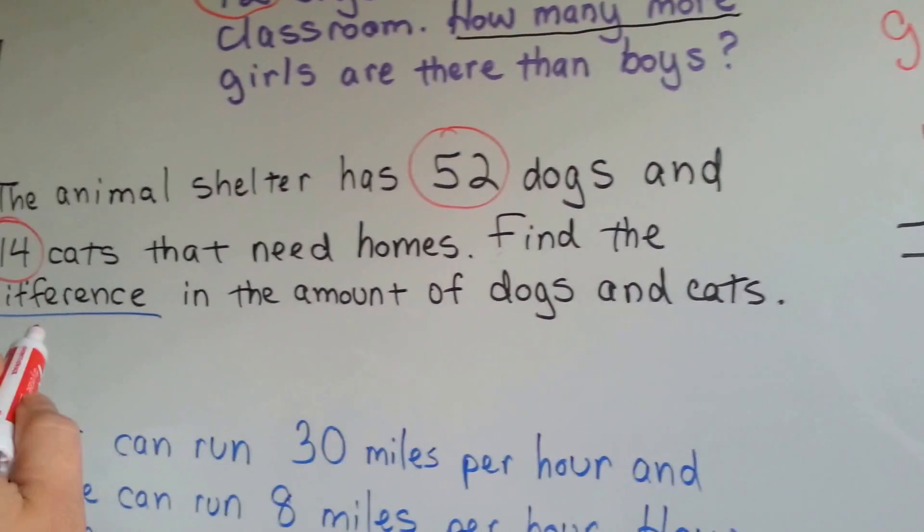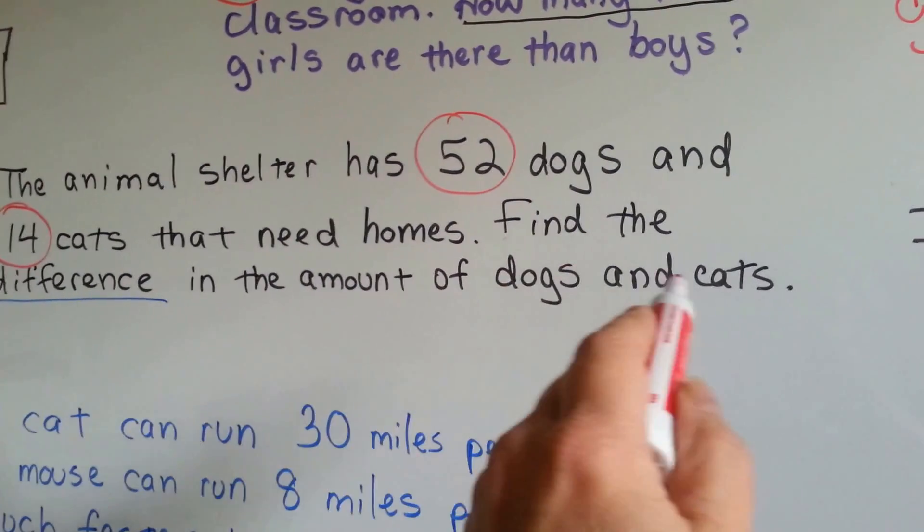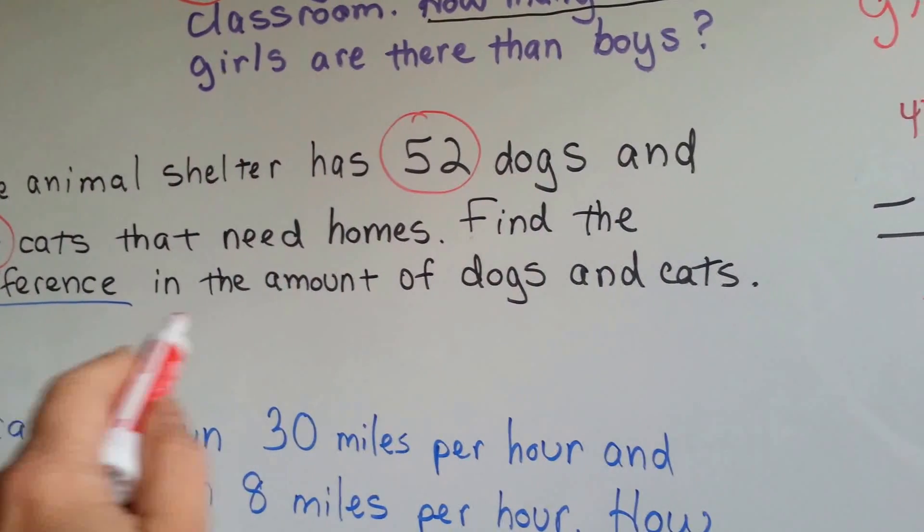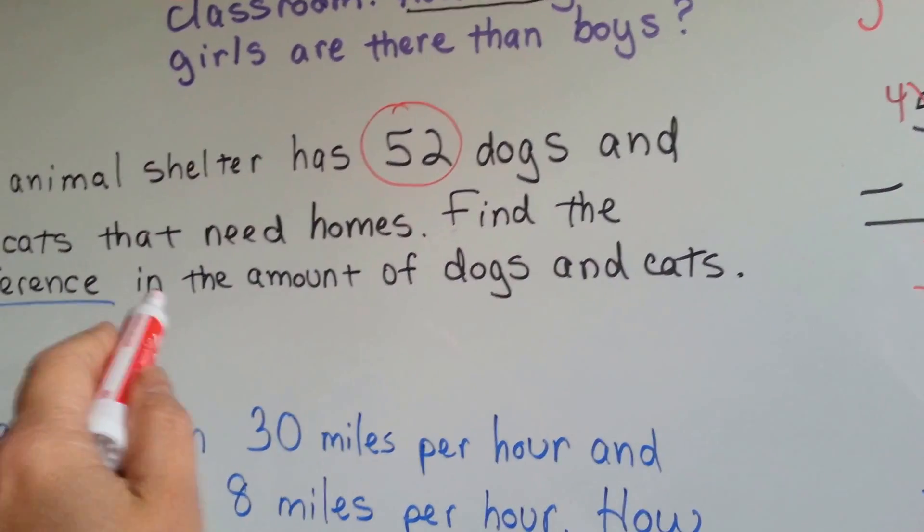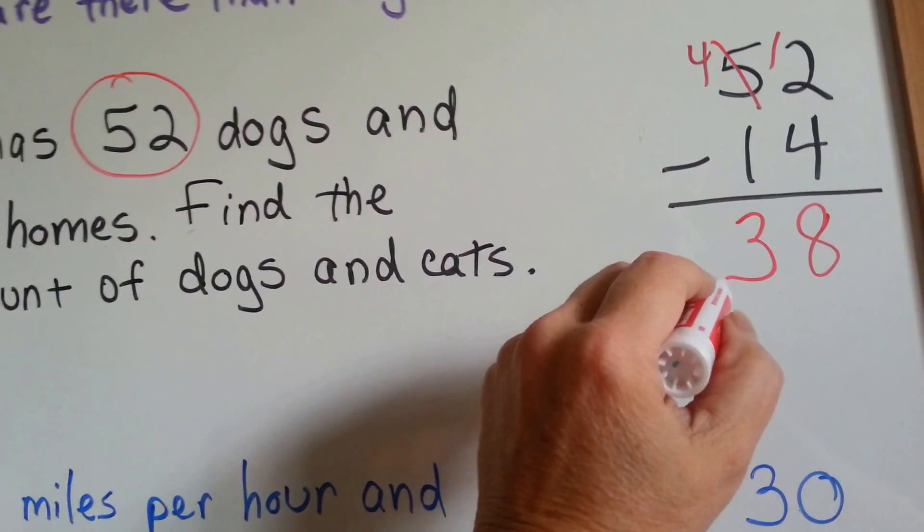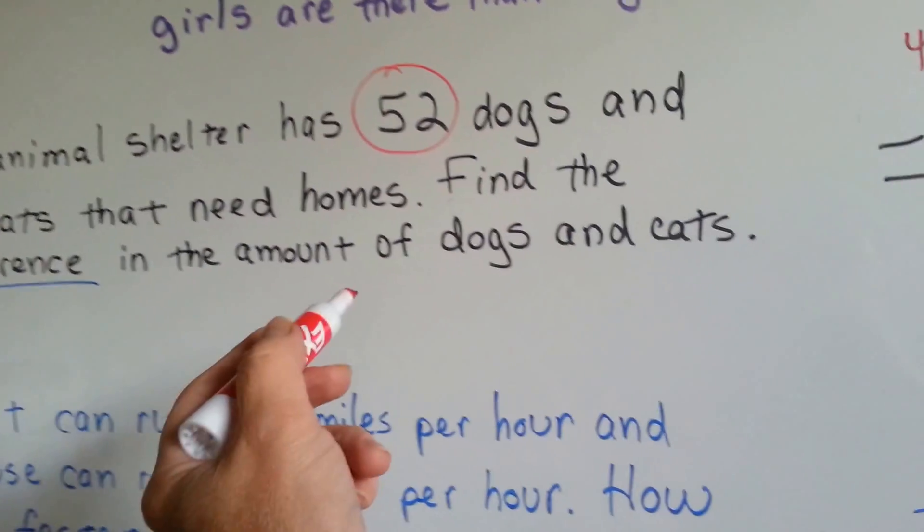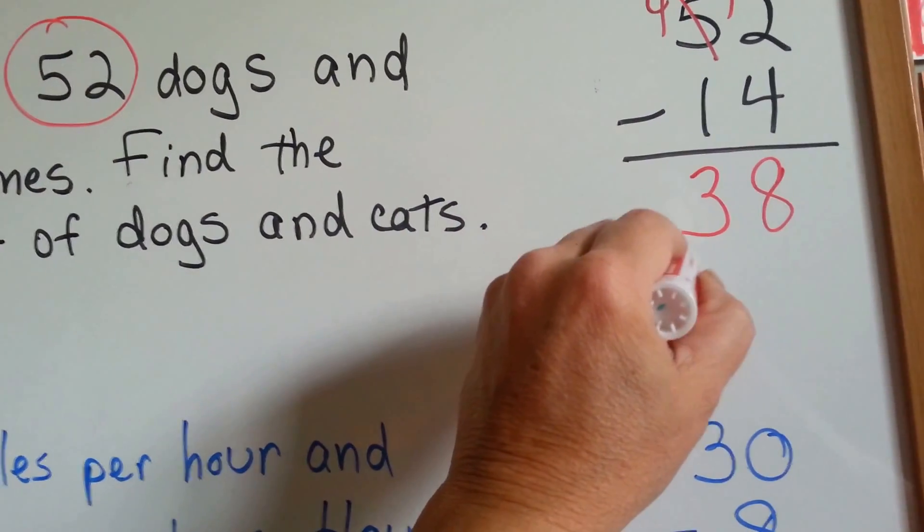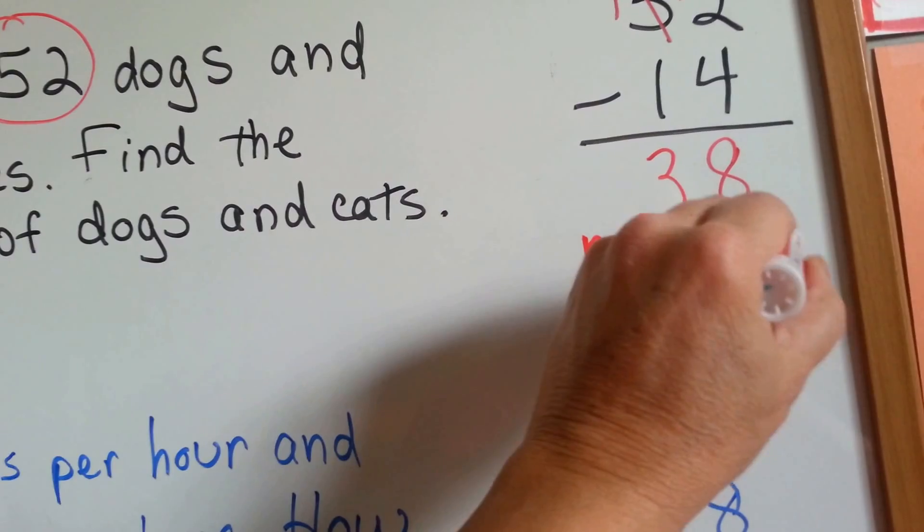38 what? Find the difference in the amount of dogs and cats. 38 more dogs. Or you could say 38 less cats. Let's go with more dogs. That's the difference between the amount of dogs and cats.